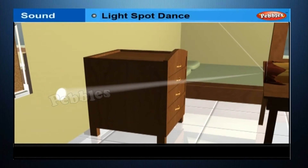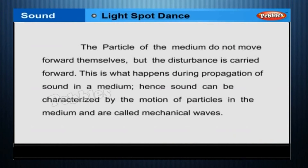Sound travels through the medium and not the particles of the medium. A wave is a disturbance that moves through a medium when the particles of the medium set neighboring particles into motion, which in turn produce similar motion in others. The particles of the medium do not move forward themselves, but the disturbance is carried forward. This is what happens during propagation of sound in a medium. Hence, sound can be characterized by the motion of particles in the medium and are called mechanical waves.